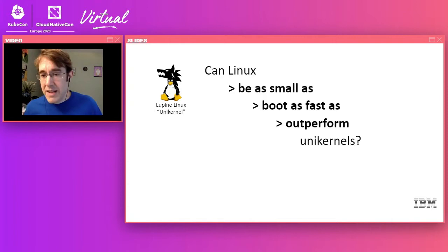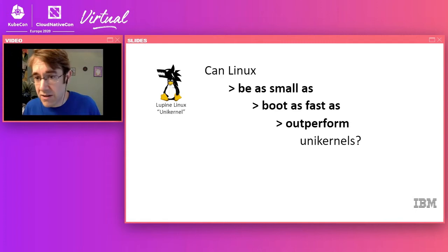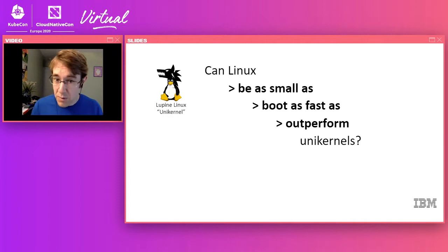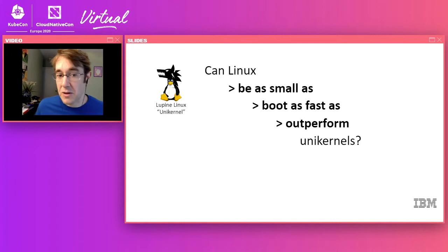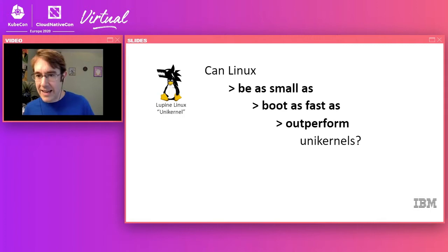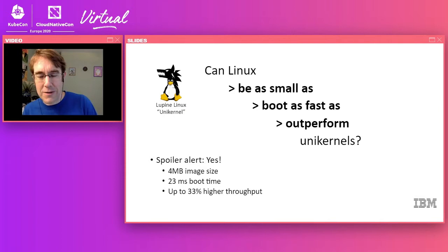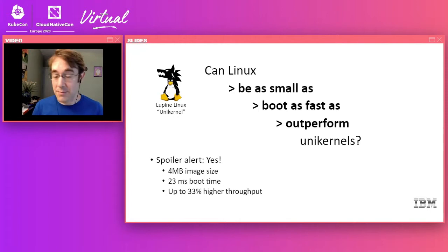What we really need for more general use in the container community is something as general as Linux but with a lot of these same unikernel properties. So the question we asked is: can Linux be as small as, boot as fast as, and actually outperform unikernels? To do this, we looked into something we call Lupine Linux, which is trying to make Linux act and look as much as possible like a unikernel. I'll hand it over to Austin to tell you exactly what we did — and hopefully the answer is yes, we can get Linux to be that small.